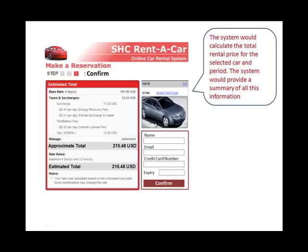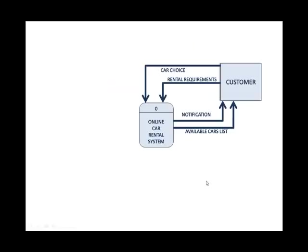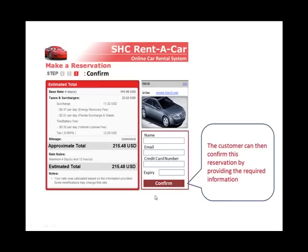The system at this point would calculate the total based on the rate and the period, and would provide back a summary of all this information to the customer. So we're looking at an output that the customer can see — something the system is giving them. This is what we call the rental summary, and it goes from the system to the customer.